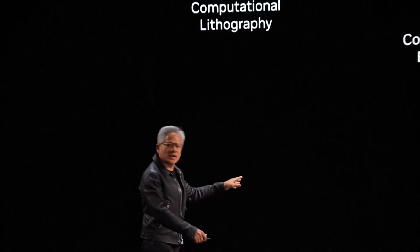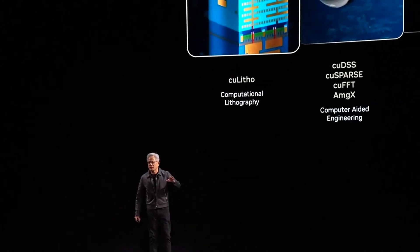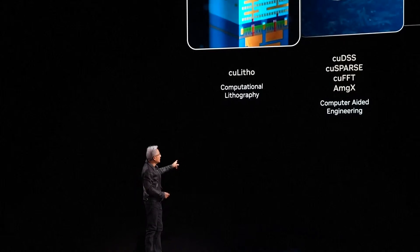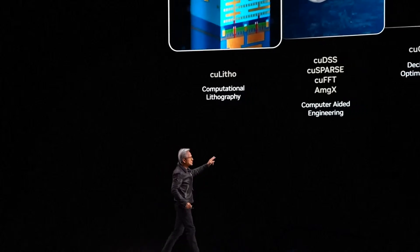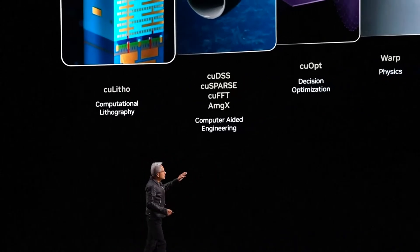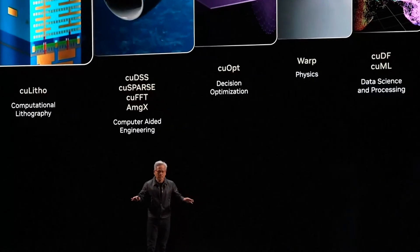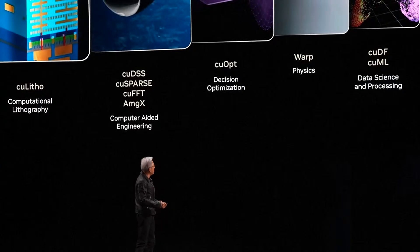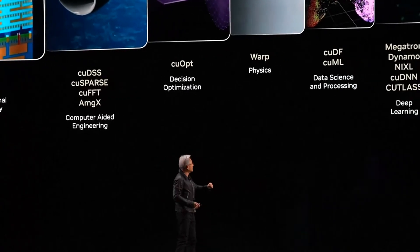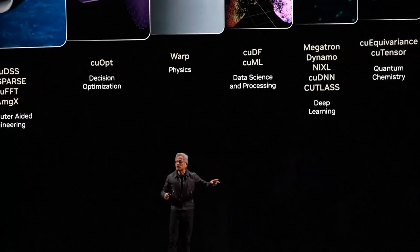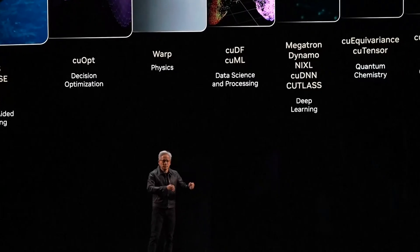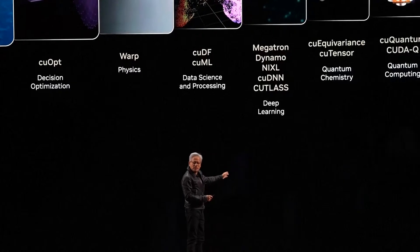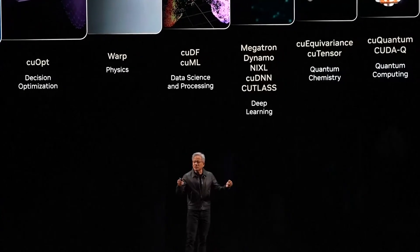If we didn't create these libraries, developers wouldn't know how to use the algorithm and use the architecture to its fullest. One application after another — this is really the treasure of our company. Computational lithography: it took us nearly seven years to get here with QLitho. Now TSMC uses it, Samsung uses it, ASML uses it. This is an incredible library for computational lithography — the first step of making a chip. Sparse solvers for CAE applications, cuOpt numerical optimization has broken just about every single record. The traveling salesperson problem: how to connect millions of products with millions of customers in the supply chain. Warp Python solver for CUDA simulation. cuDF — a data frame approach, basically accelerating SQL data frame databases.